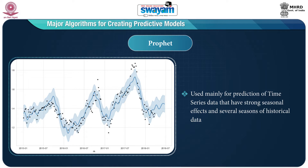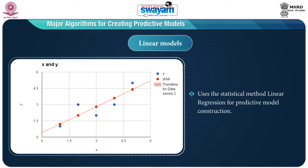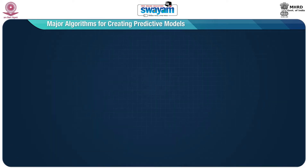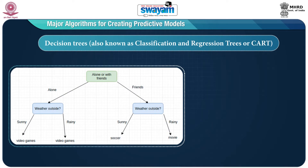The next algorithm is the Prophet algorithm — this is used mainly for prediction of time series data that have strong seasonal effects and several seasons of historical data. The next one is the linear model — this uses the statistical method of linear regression for predictive model construction.